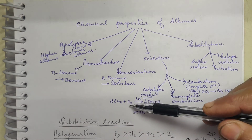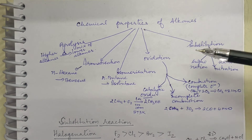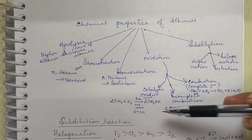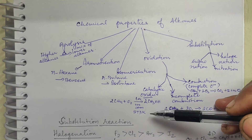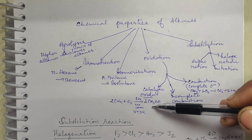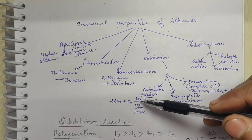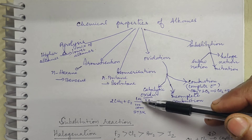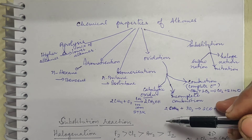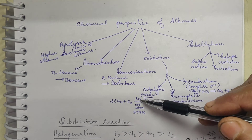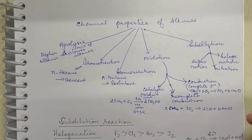For catalytic oxidation, methane is subjected to oxidation in the presence of copper as a catalyst at 100 atmospheres and 573 K to give methanol. Using a different catalyst, the product formed may be an aldehyde. Catalysts are highly specific — a particular catalyst will give only one type of product.